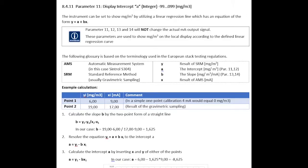Parameters 11 to 14 are used to set the display of the S3O4 or S3O5 to show milligram per cubic meter. In order to do that, you need to correlate the reading of your standard reference method, which is usually a gravimetric sampling, to the reading of your automatic measurement system, which is in this case the S3O4 or S3O5.